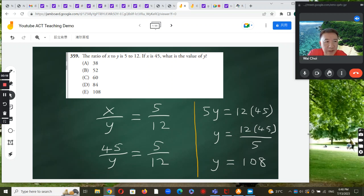Let's work on the ACT question today. This question states that the ratio of x to y is 5 to 12, and if x is 45, what is the value of y?